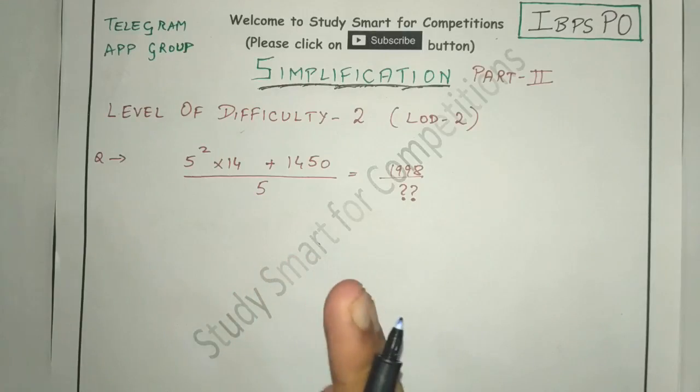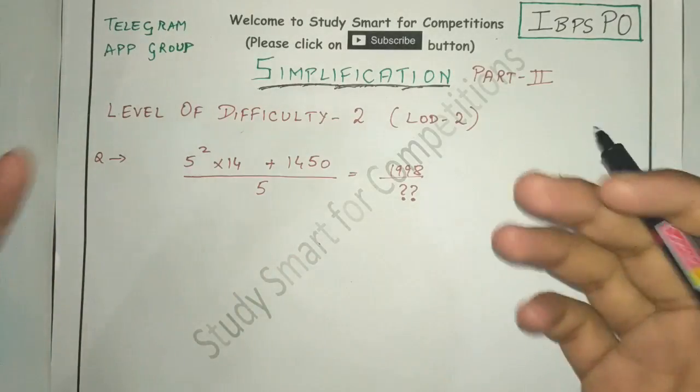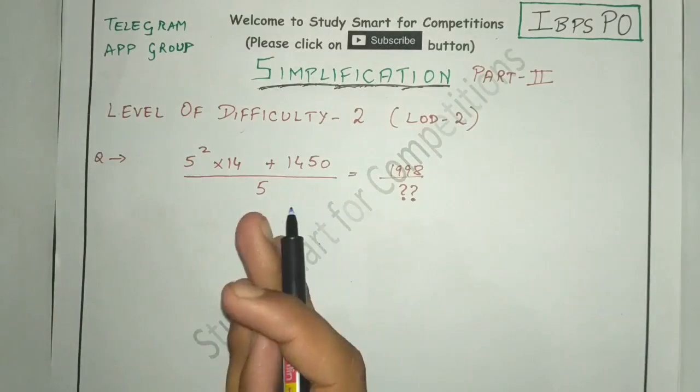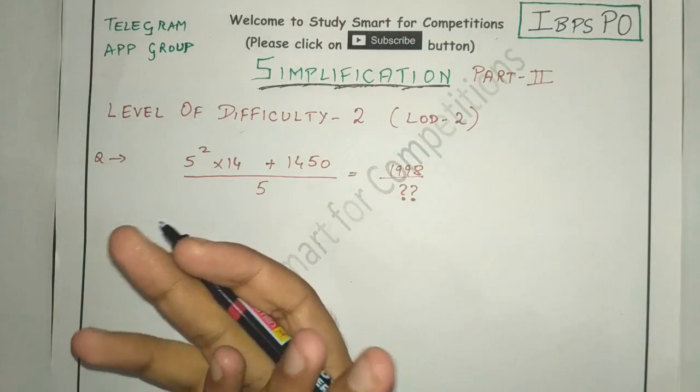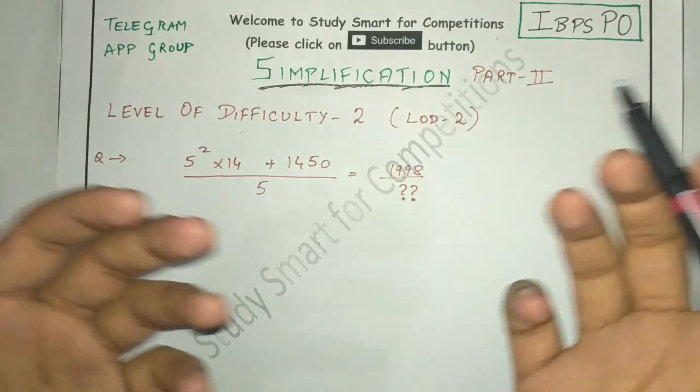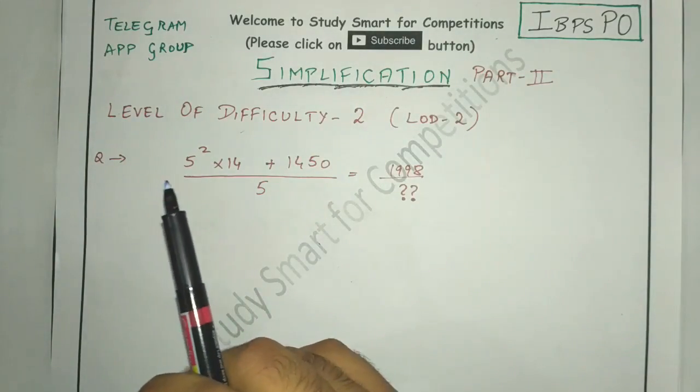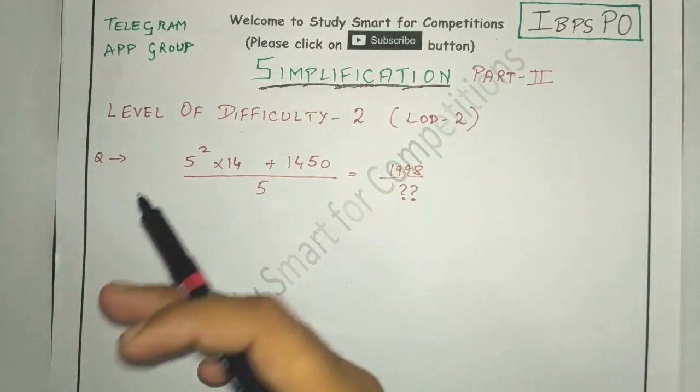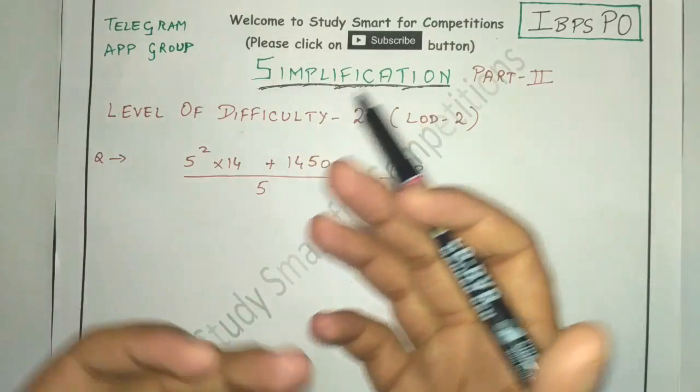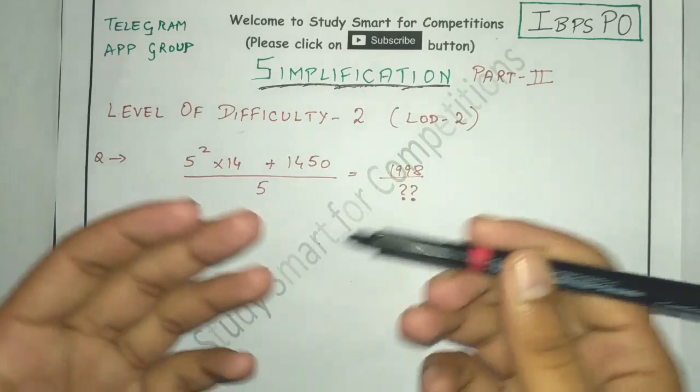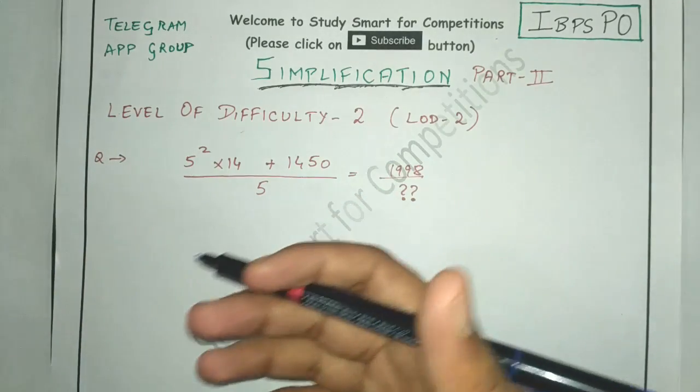I'll be covering simplification level of difficulty 2, that is LOD2. You are free to go to LOD1 type questions which I have covered in one of the previous videos. You can easily find it in the playlist of IBPS RRB and PO itself. It has many of the basic concepts that you need to do first before proceeding to this type of questions.